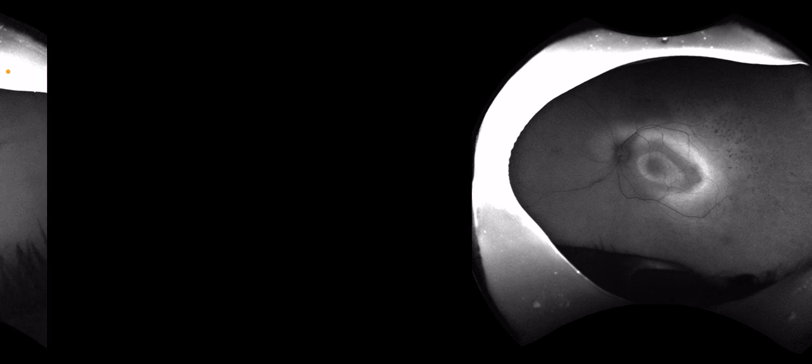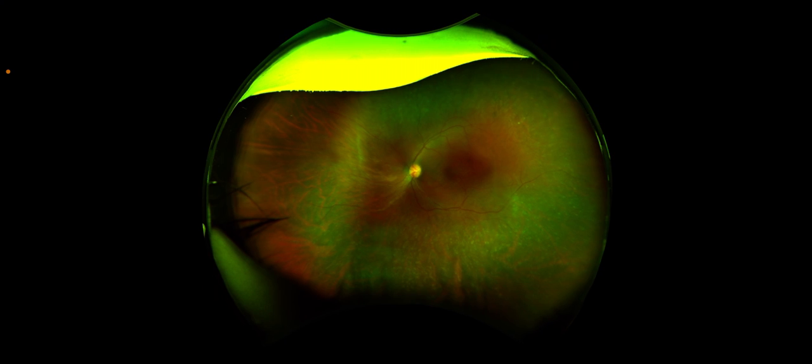This is a fundus photograph of the right eye, which discloses pigmentary changes throughout the retina as well as in the macula. This is fundus autofluorescence of the left eye, which shows hypo-autofluorescent lesions throughout the retina and a ring of hyper and hypo-autofluorescence in the macula, similar to the right eye. This is the color fundus image of the left eye.